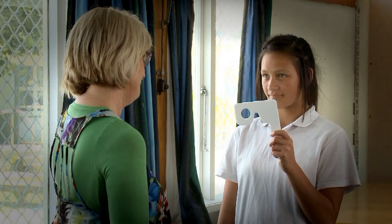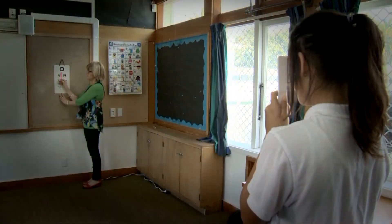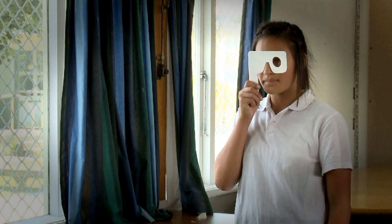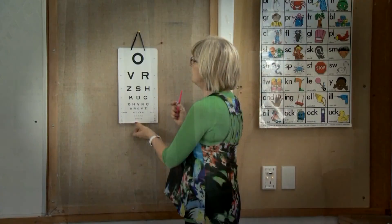Pupils with a vision result of 6/9 6/6 or 6/6 6/9 or 6/9 6/9 will be sent a notification letter home with an option of a referral should there be any concerns. There will be no vision re-screens in Year 8. Results are recorded as the smallest letter size at which the child correctly identifies all letters in the line.